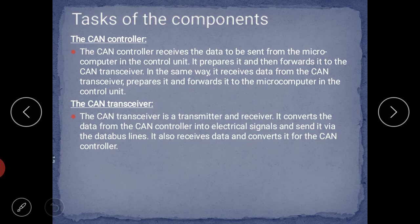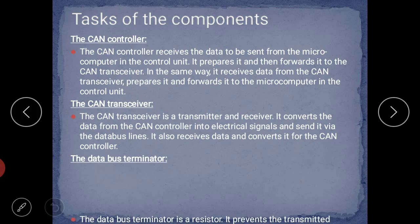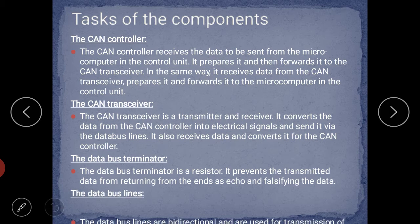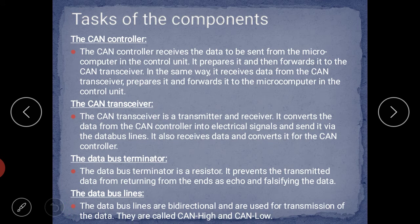Third, the data bus terminators — these are basically resistors. They prevent the transmitted data from returning from the ends of the bus as an echo and falsifying the data. If a terminator is not provided, data on the bus lines may create an echo and falsifying effect. To remove that effect, two data bus terminators are attached. The data bus lines are bi-directional, so data can be transferred in either direction. They are called CAN High and CAN Low lines.